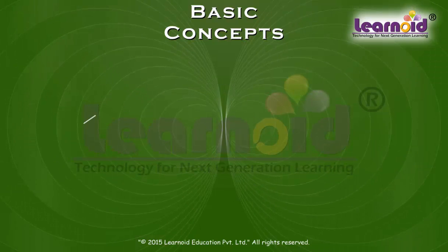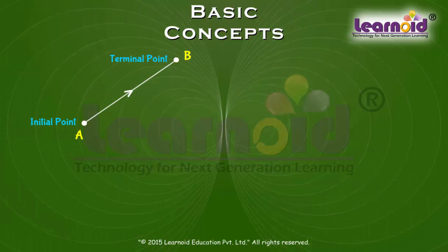The starting point of the vector AB is called the initial point and the point B where it ends is called its terminal point.